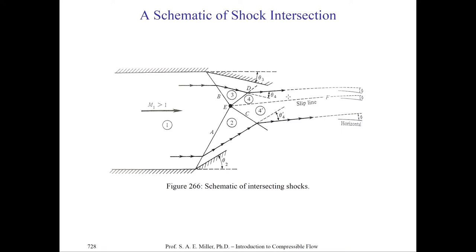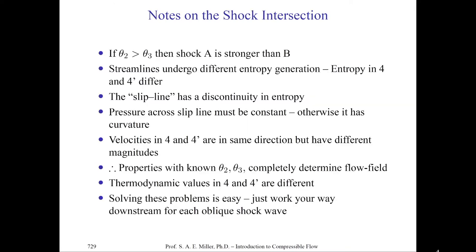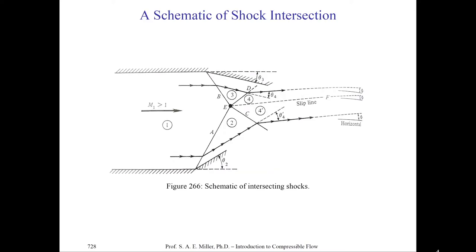Since the slip line is a straight line, the pressure across it is zero — same principles you learned in incompressible classes, but with compressibility effects. Since it's a straight line the pressure is constant across, but we have a different entropy. This probably means we have different densities and temperatures according to the ideal gas law. The velocities across the slip line between 4 and 4 prime are in the same direction but have different magnitudes. Therefore, knowing theta, theta2, and theta3 completely determines the flow. This is called a marching problem — we know the properties at 1 and we march downstream to find properties of 2, 3, 4, and 4 prime.